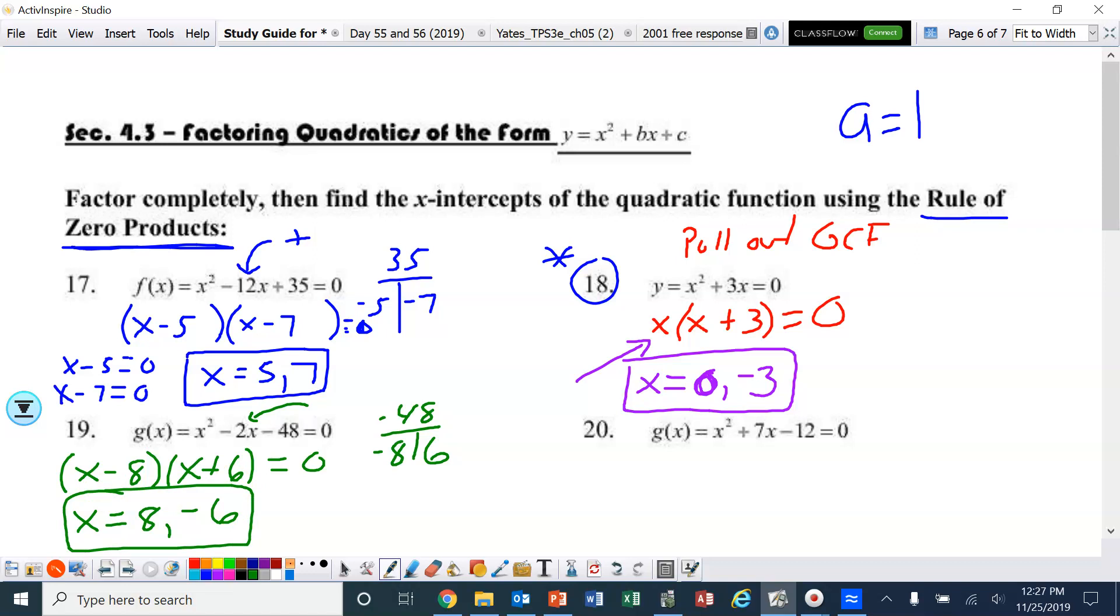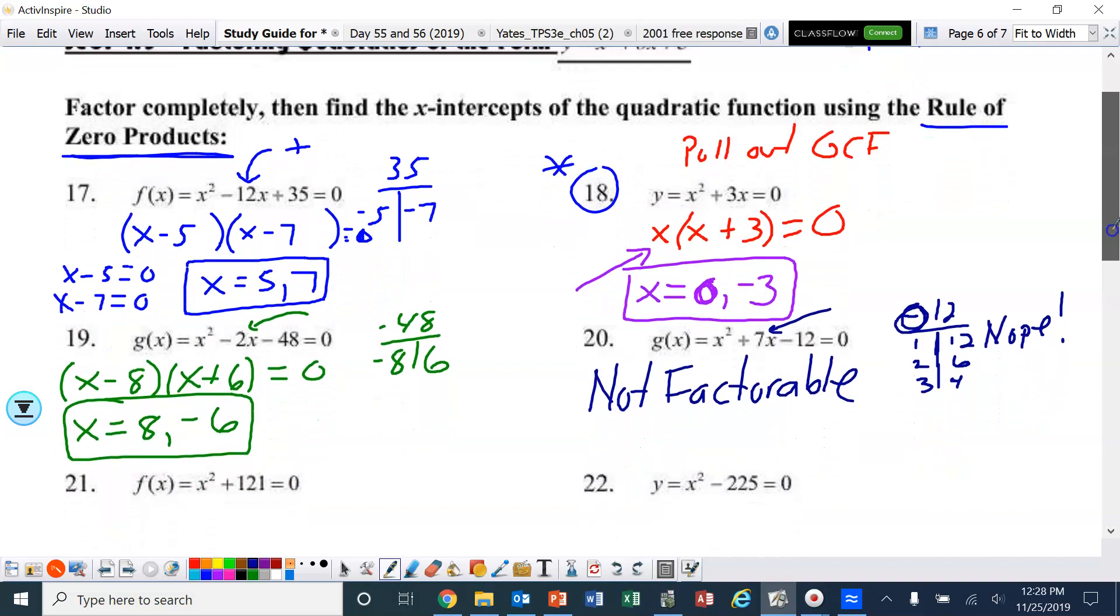Number 20. Factors of negative 12 that give us positive 7. Well, let's think about this. I know my factors of 12 are 1 and 12, 2 and 6, 3 and 4. But in order for this to be negative, one of them has to be negative, but they have to add up to 12. Nope, I don't think so. So in this case, ladies and gentlemen, this is not factorable. We could not find two values that multiply to negative 12 and add to 7 at the same time.